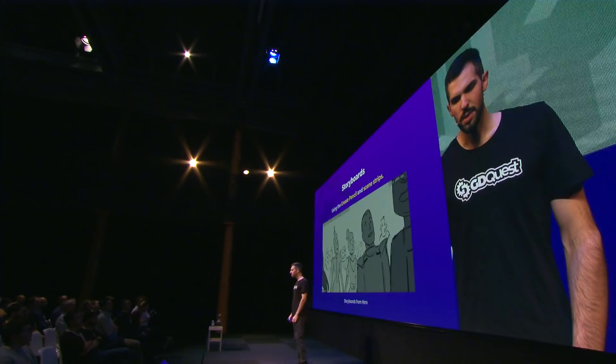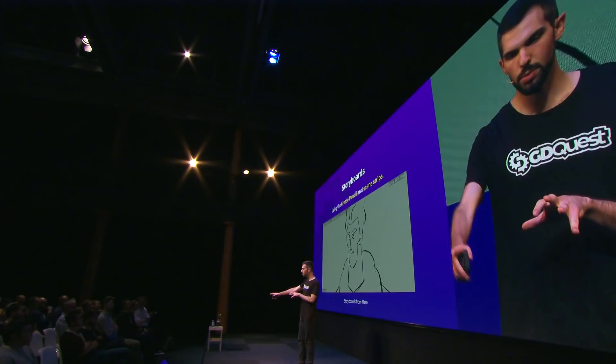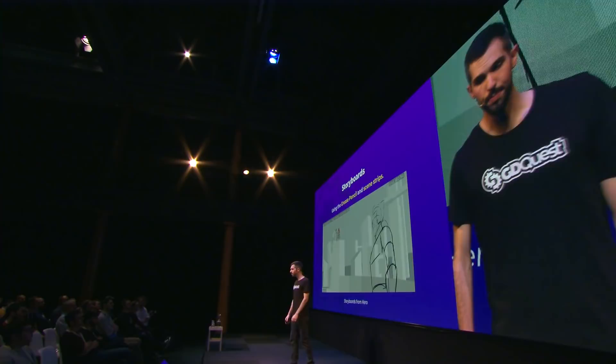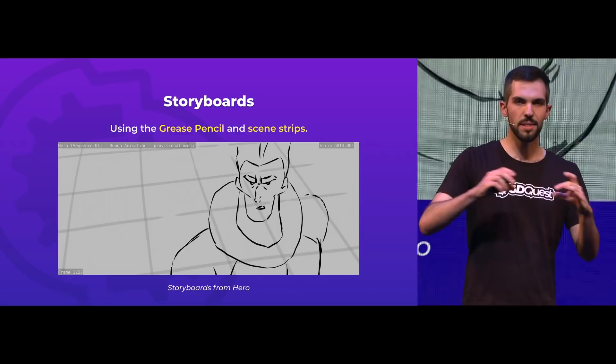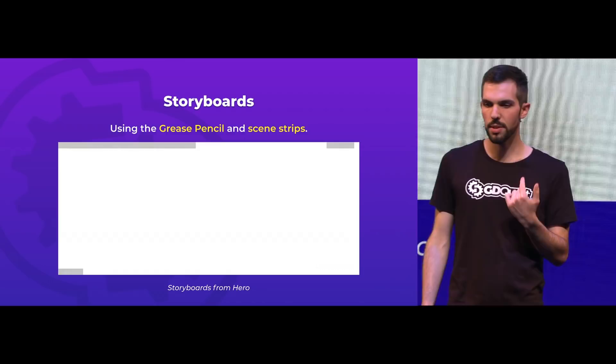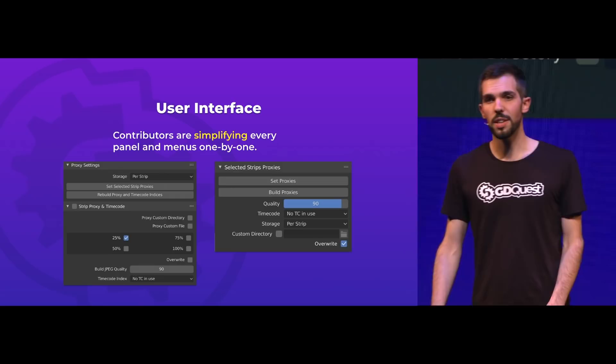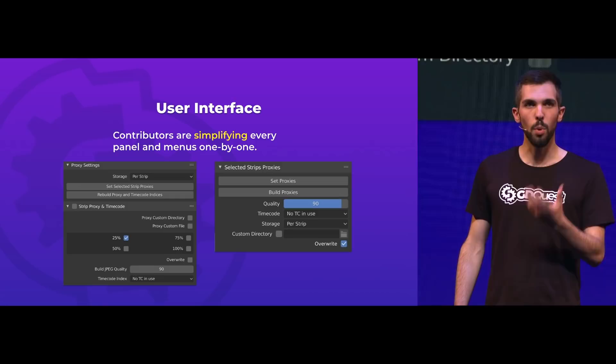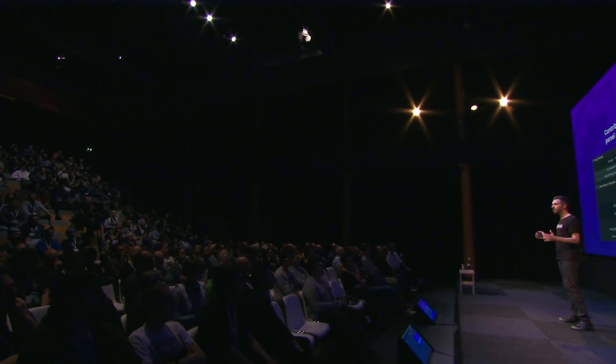There are tweaks being made to improve storyboarding with Blender — this is the Hero movie, and you can see it's using strips in the top right corner. There's a problem with the fact that you can't easily jump from a scene strip in the sequencer back to the 2D view. There are also improvements coming to the user interface. Peter Fogg, a contributor, is working with William on UI in Blender, simplifying everything and making it clear what options do. Every panel is being remade right now, one by one.